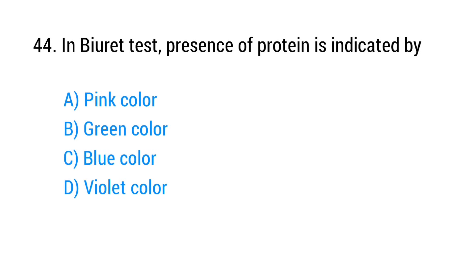Question number 44. In biuret test, presence of protein is indicated by? The right answer is option D: Violet color.